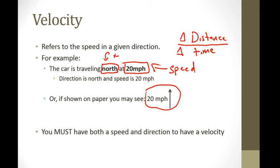Velocity always must have both speed and a direction. If you have one or the other but not both, you do not have a correct answer for velocity.